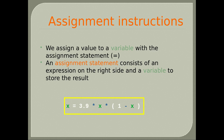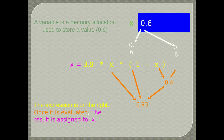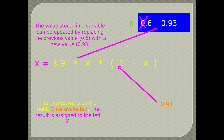For example: x = 3.9 * x * (1 - x). The expression is on the right. Once it is evaluated, the result is assigned to x. The variable is a memory allocation used to store a value, for example 0.6. The value stored in a variable can be updated by replacing the previous value 0.6 with a new value 0.93.